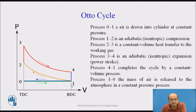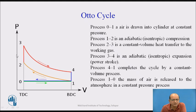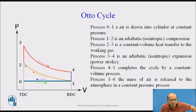At this point, the exhaust valve closes and the suction valve opens, and the cycle repeats — air is drawn from 0 to 1 again. The suction valve closes when the piston reaches BDC at point 1, then compression takes place, heat addition from 2 to 3, expansion from 3 to 4, exhaust valve opens at point 4, pressure drops, and burnt gases are expelled. This is the complete working of the Otto Cycle.